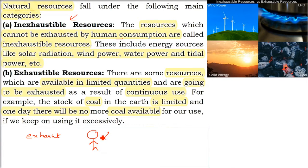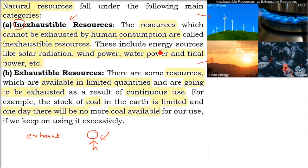Inexhaustible resources are those which, if we use them, will never be exhausted. Examples include solar radiation, wind power, water power, and tidal power — all fall under this category. Tidal means the waves; waves have power and energy. Hydroelectricity is generated by water power.